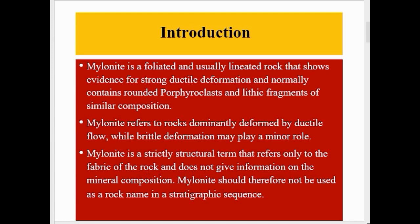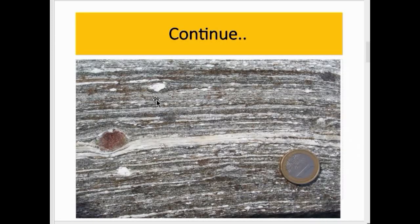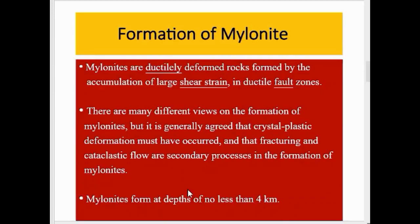Mylonite should not be used as a rock name in stratigraphic sequences — it is only a fabric descriptor, not a rock type for stratigraphic correlation. Here you can see the mylonite rock, with porphyroclasts surrounded by a finer-grained groundmass. The grain size is highly deformed due to ductile and brittle deformations.